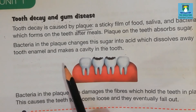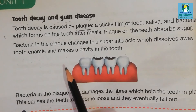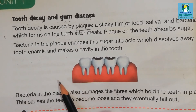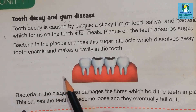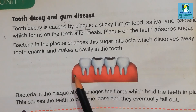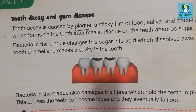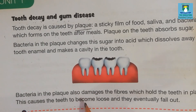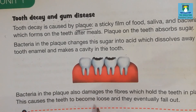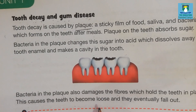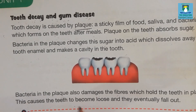To summarize today's topic: we discussed tooth decay and gum disease. Tooth decay is caused by plaque, which is a sticky film of food that contains millions and billions of bacteria. This plaque absorbs sugar and changes it into acids that can make a cavity in the tooth. Bacteria in the plaque also damages the fibers which hold the teeth in place, causing them to become loose and eventually fall out.